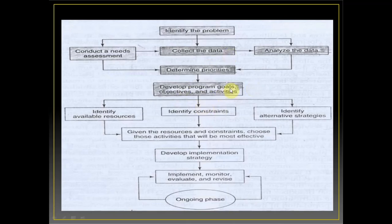We then plan goals and objectives. The goal is to reduce caries experience in a city. Objectives are the measures to achieve the goal — for example, planning a fluoridation program, a fluoride mouth rinse program, pit and fissure sealant programs, and oral health education programs. We also need to identify resources: money, manpower, and time.